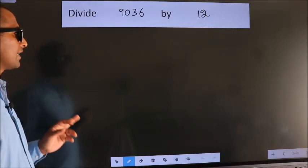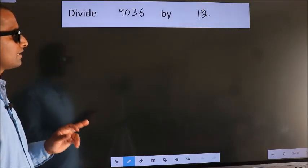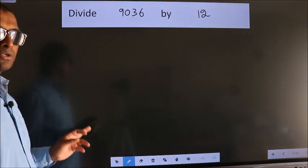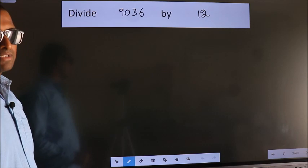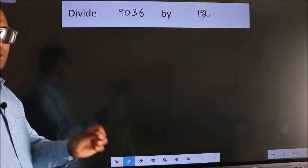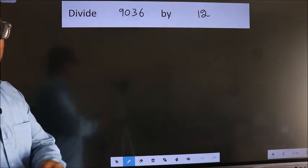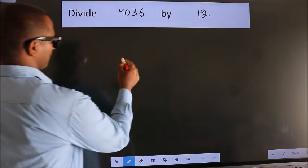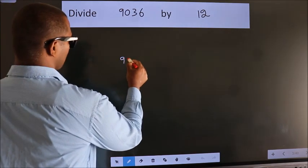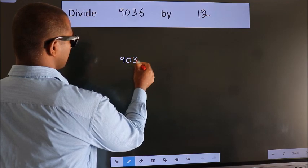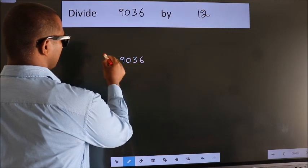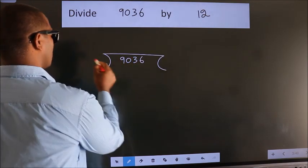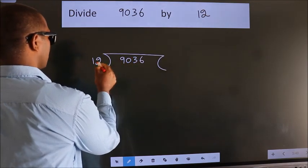Divide 9036 by 12. To do this division, we should frame it in this way: 9036 here, 12 here.